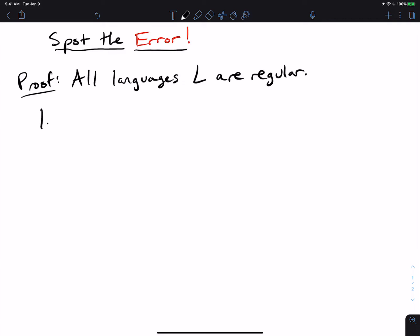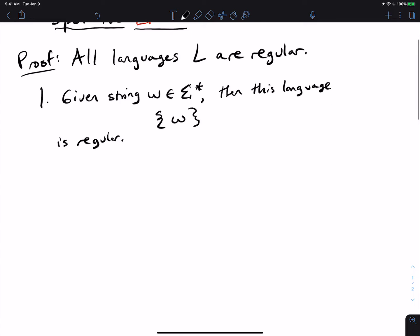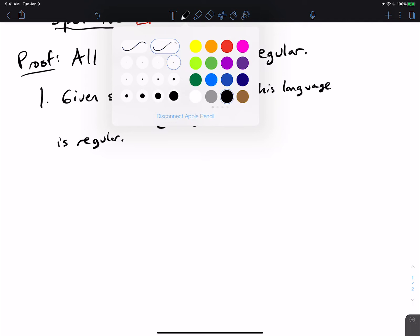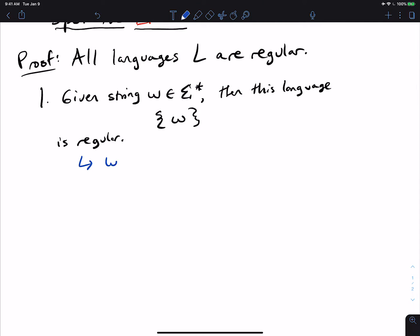So the first step in this proof is to say, well, if we have a given string, so if we have a string w in sigma star, then this language, which is just the string and nothing else, is regular. And why is this? So what is the justification for this? Well, let's just say that w is w1, w2, w3, up to wn, where each of the wi is a single character, just naming the characters.